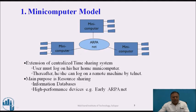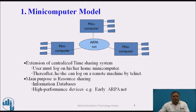If any diskless workstation wants to log into this communication network, it will first log into the mini computer, then become a remote machine and share resources in the network. This is an extension of the centralized time-sharing system. The user must first log on to their mini computer, and thereafter they can log on to a remote machine by TELNET. The main purpose of this model is resource sharing — hardware or software resources such as information databases or high-performing devices. The example of this model is the early ARPANET.